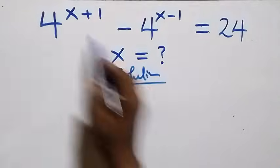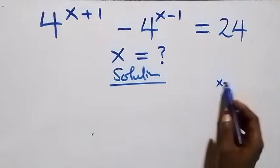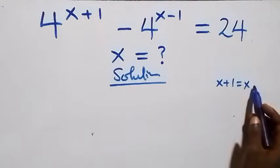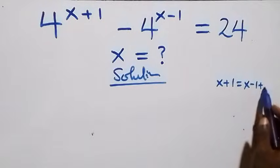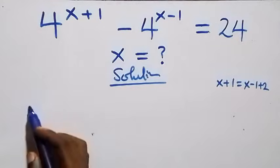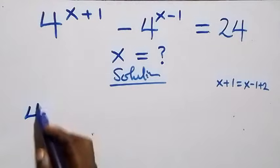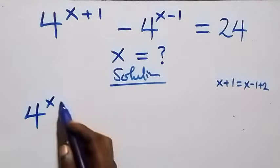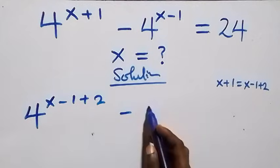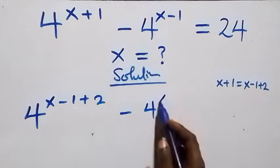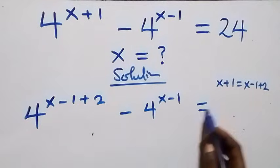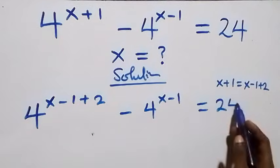And what we have here, we can rewrite x plus 1 as x minus 1 plus 2. That is, here what we have becomes 4 raised to power x minus 1 plus 2, then minus 4 raised to power x minus 1, then equals to 24 from here.